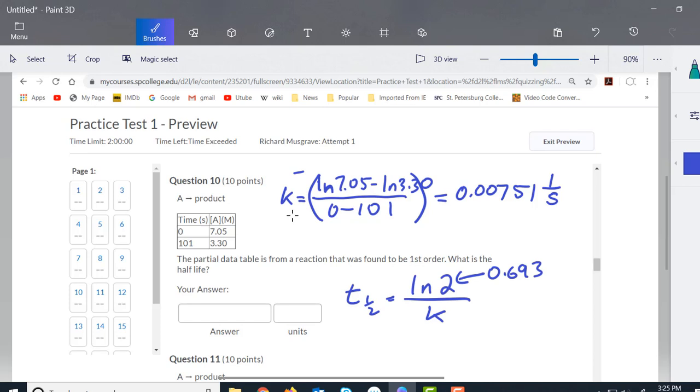You put that in the calculator and that means it's going to be 0.693 divided by the k value we calculated, 0.00751 per seconds, and you can see that the unit there will be seconds and it will be 92.2 seconds.